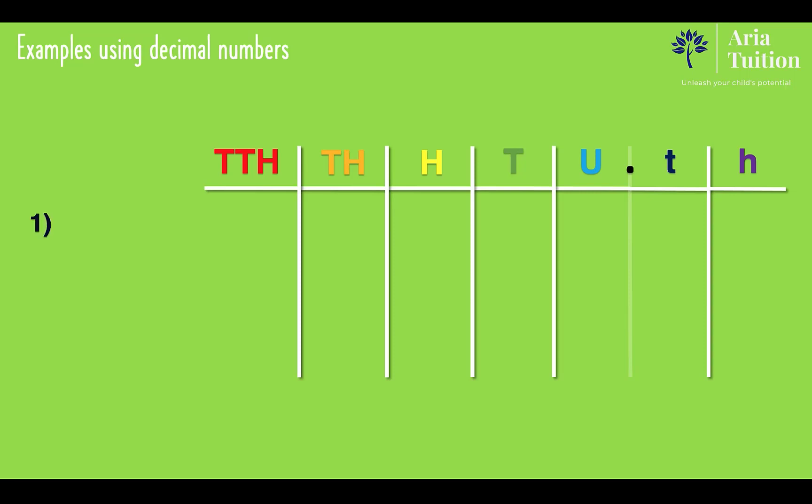Question number one is 783.2, where there are seven hundreds, eight tens, three units, a decimal point, and two tenths.